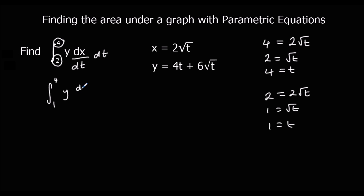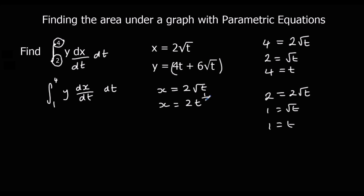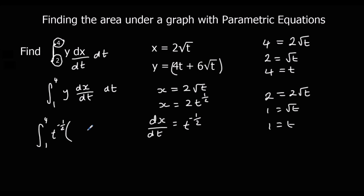So we're going to integrate y times dx/dt with respect to t, with the two bounds of 4 and 1. We know what y is, but we don't know dx/dt yet. If x is 2√t — or 2t to the power of a half — then dx/dt: we multiply by the power, 2 times a half is 1, and take one off the power, giving t to the power of minus a half.